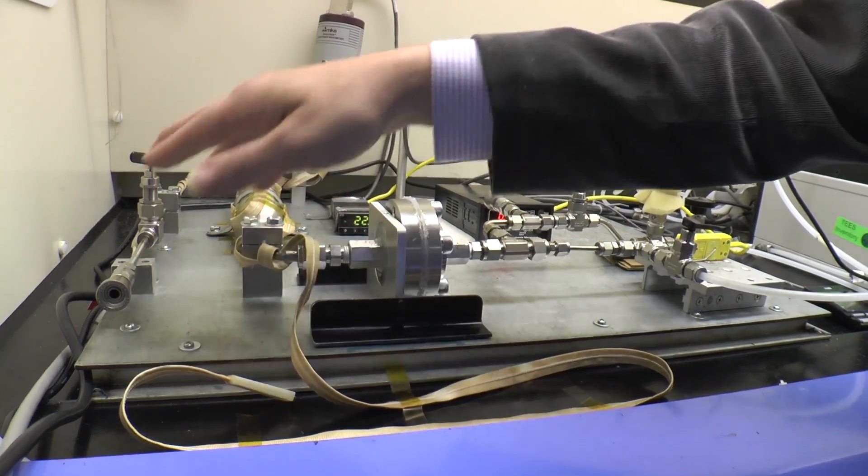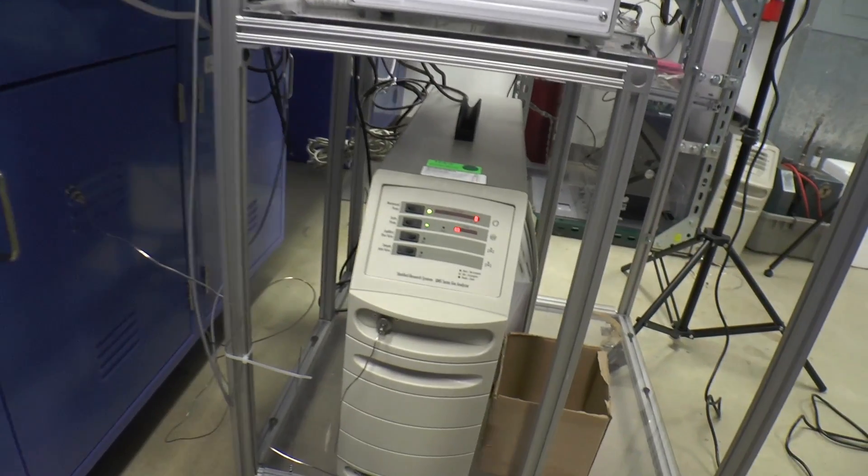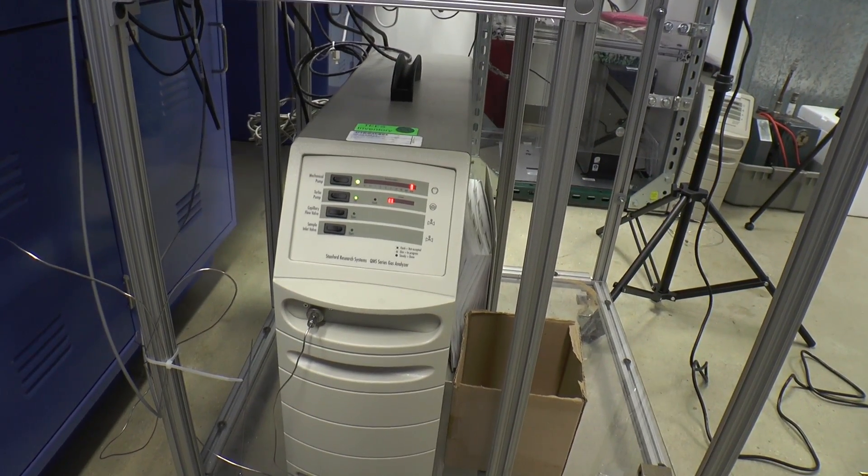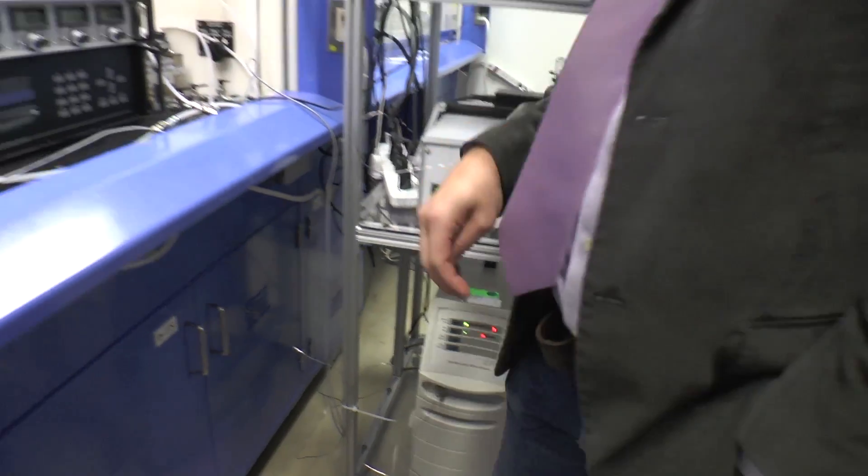And then we can, using this port, connect this to our vacuum gas sensor tucked away in the corner here, which will also give us the compositional reading so we can back out, out of that total gas permeation, how much of that is hydrogen versus nitrogen.